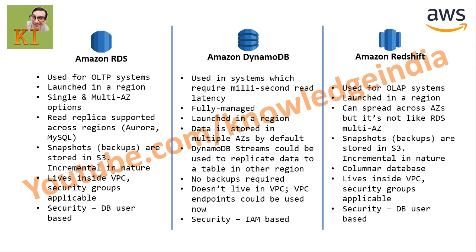For snapshots, you can have both manual and automatic types. Snapshots are always stored in S3 and are incremental in nature, which keeps overall cost lower. Only the blocks that have changed since the last snapshot are captured - so if you took a snapshot yesterday and take one today, only the changed blocks are stored, not everything.